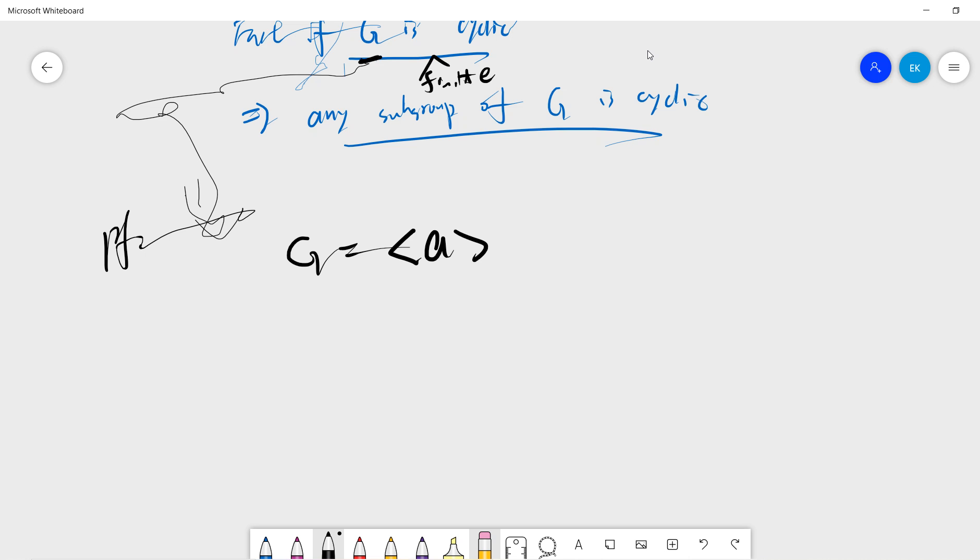That means every element in G is just the power of A. We take the element X in H. Suppose H is a subgroup of G. Then if H is identity, if H is generated by E, then there's nothing to prove.